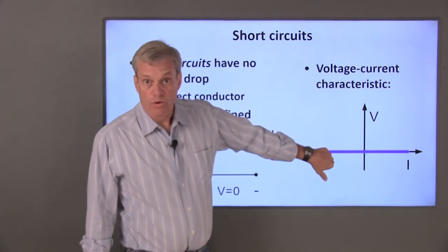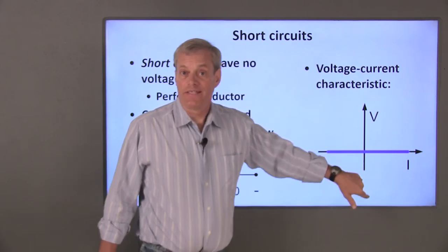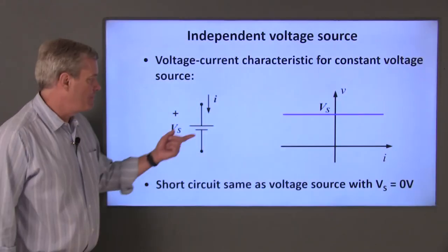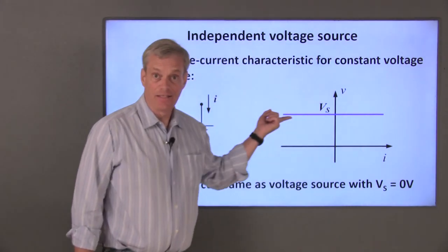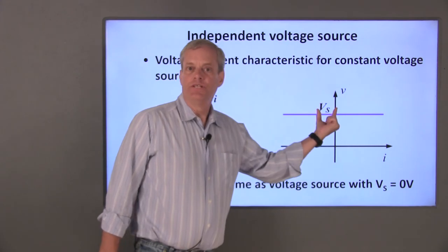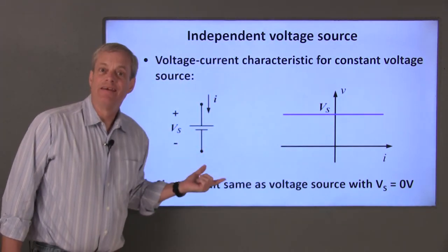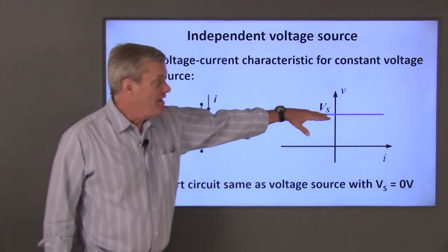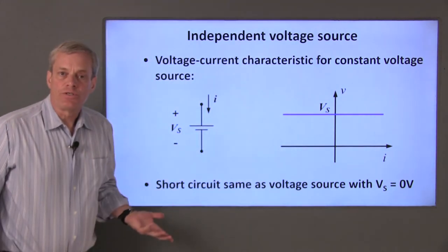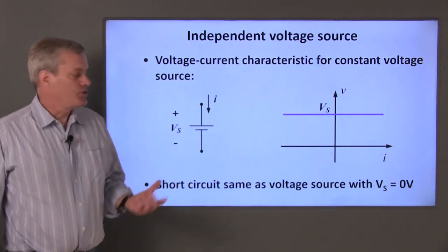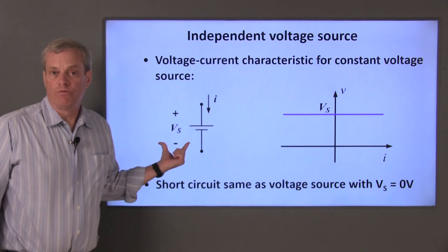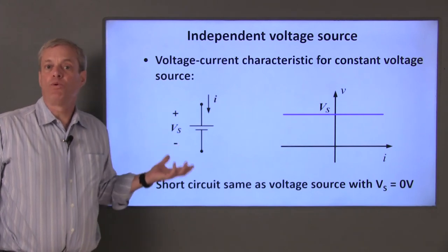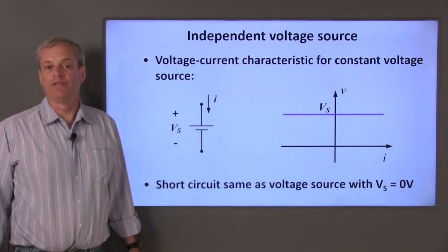Graphically, the voltage-current characteristic for a short circuit corresponds to a horizontal line at V equals zero. The voltage-current characteristic for an ideal voltage source is also a horizontal line, where the voltage is V sub S for any value of current. This is the same curve as for a short circuit when the voltage source is zero — a short circuit is mathematically the same as an ideal voltage source with V sub S equals zero volts. This similarity will be important for various analysis approaches later in the course.